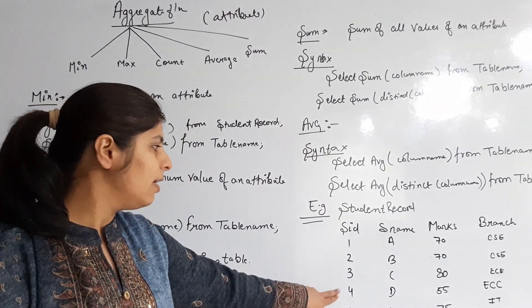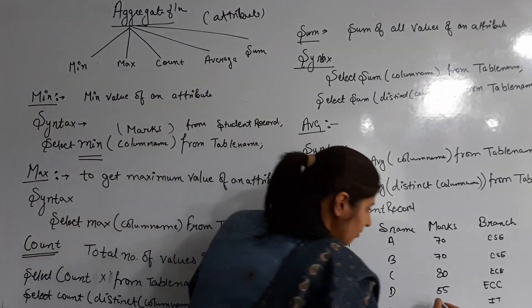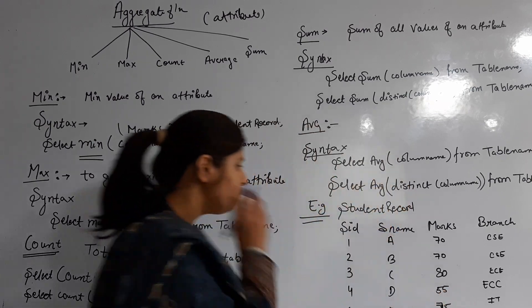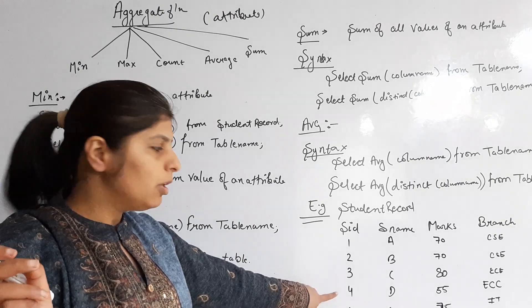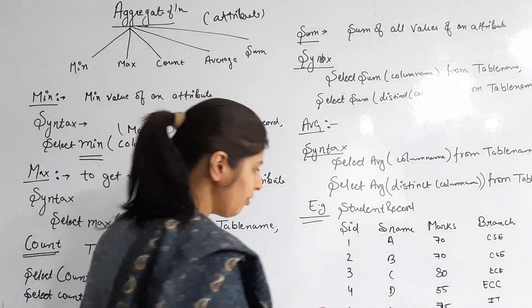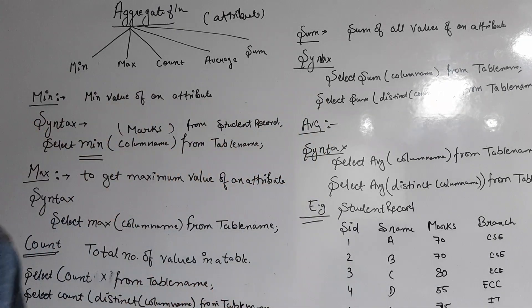The minimum is roll number four with 55 marks. So the value that is fetched is 55.